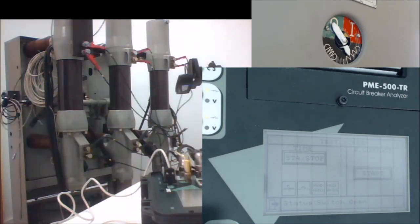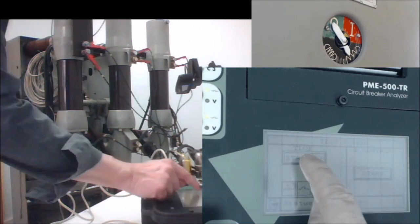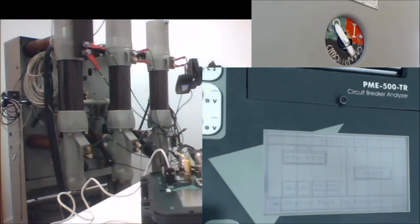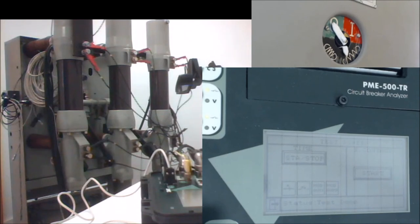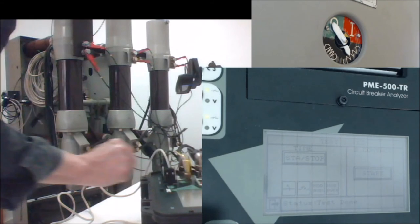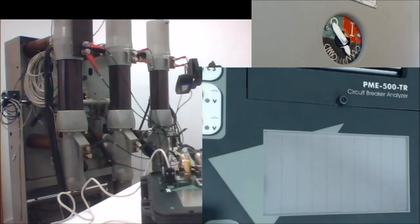We recover the initial open position in order to perform the close-open sequence for the test. We come back to the initial position. Now we press start in order to execute the programmed test — the close-open sequence. When I press here, you will see that it takes approximately one and a half seconds for the unit to initialize the test before the first command is actually issued to the circuit breaker. The breaker is back in the initial open position.